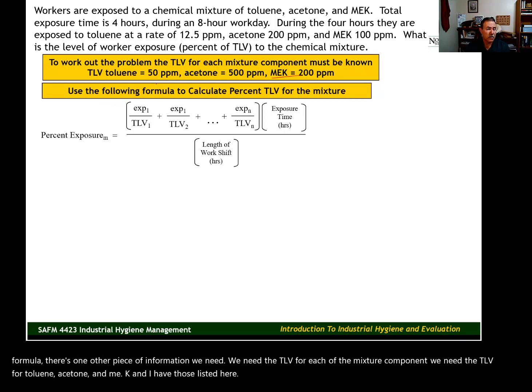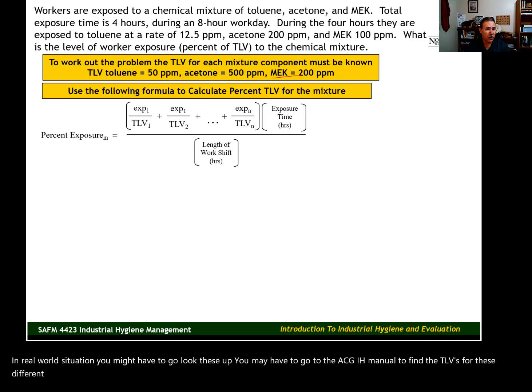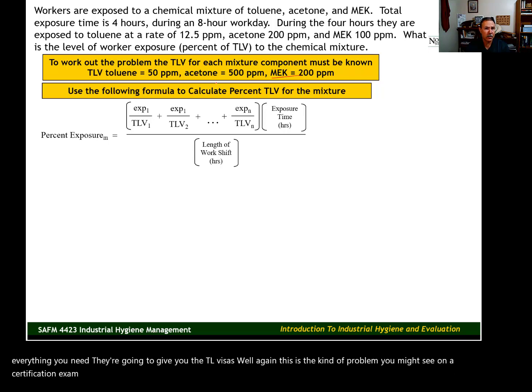In a real-world situation, you might have to go look these up. You may have to go to the ACGIH manual to find the TLVs for these different substances. Now, on the certification exam, they're going to give you what you need. They're going to give you the TLVs as well. Again, this is the kind of problem you might see on a certification exam.